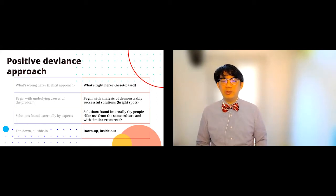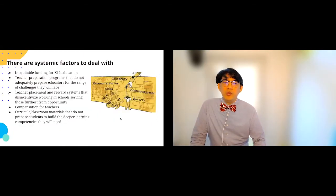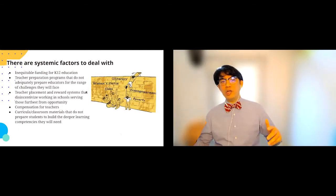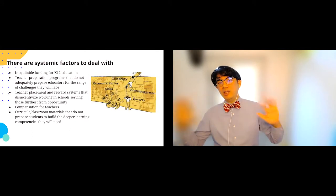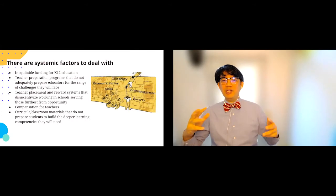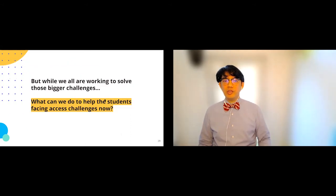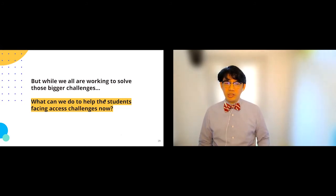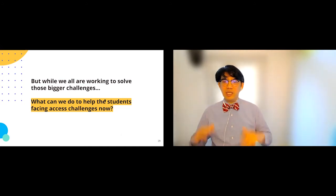We're not denying there are a lot of systemic factors we have to deal with in K-12 education. We still need to do the hard work to remove structural impediments — ways in which the system is unfairly created and sustained, leaving a lot of folks out. But in the short term, while we're taking on those big challenges, we're also thinking: what can we do right now to help students who are facing challenges immediately? These two things complement one another.